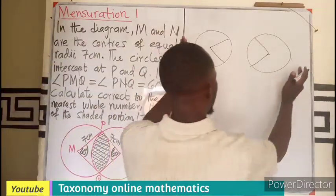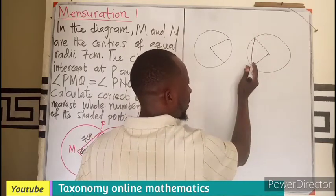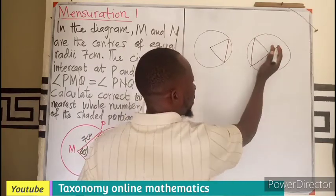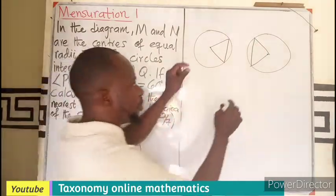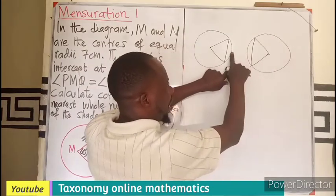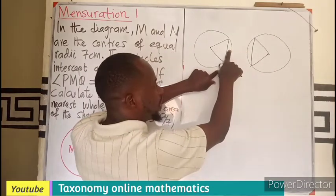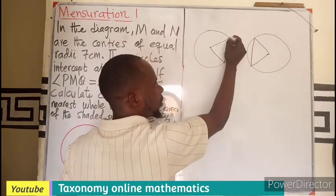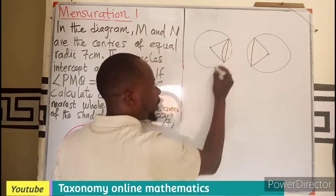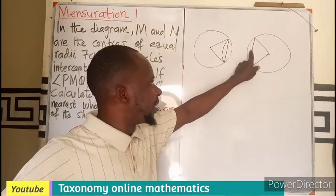As you bring them closer, these two areas came to overlap. If you bring them closer to touch, this area is going to slide onto this and overlap it. It is going to overlap in order to form the diagram we are seeing.